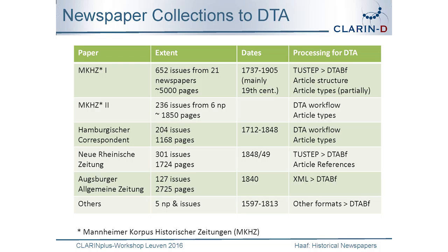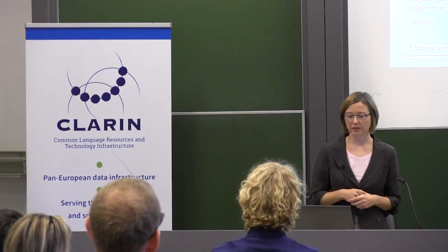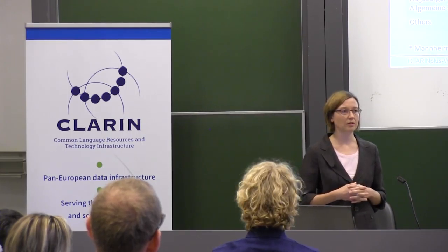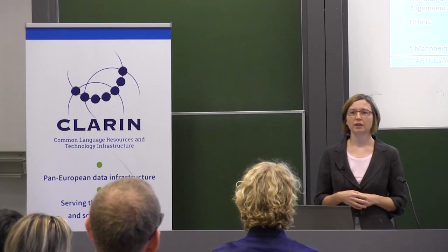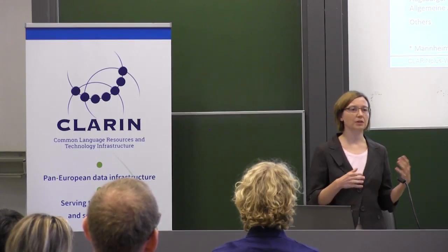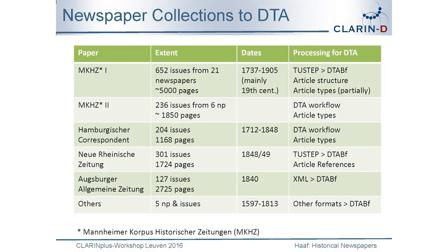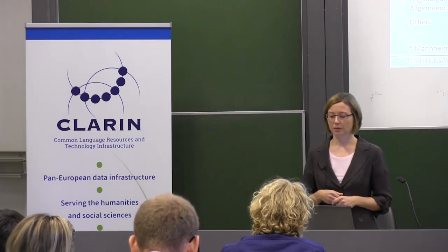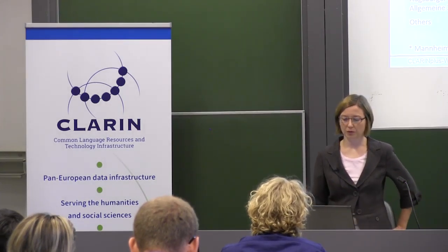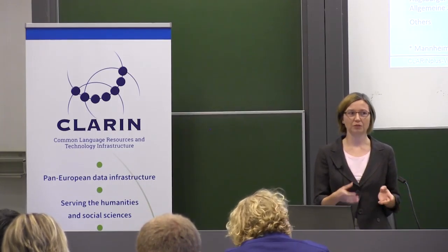Here's an overview of what is provided right now and the processing steps we perform to publish the newspapers. Some of the newspapers came in TEI format and had to be converted to the DTA-based format. We apply article text types where possible, making distinctions between political news, financial news, feuilleton, and similar types. This is not done for all newspapers but for a significant amount, especially for those digitized from scratch according to the DTA workflow.